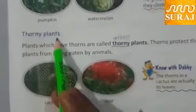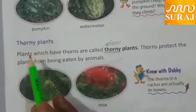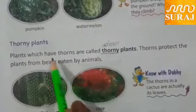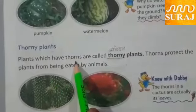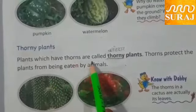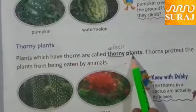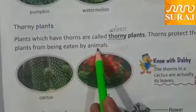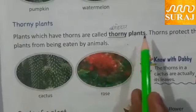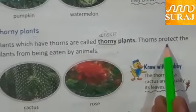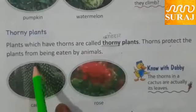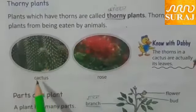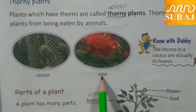Thorny plants: Plants which have thorns are called thorny plants. Thorns protect the plants from being eaten by animals. For example, cactus and rose.